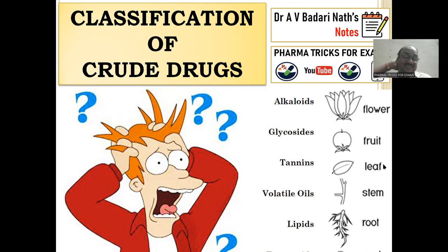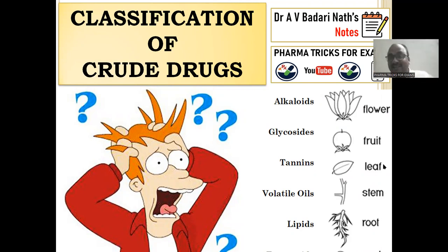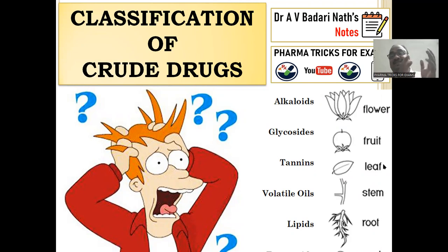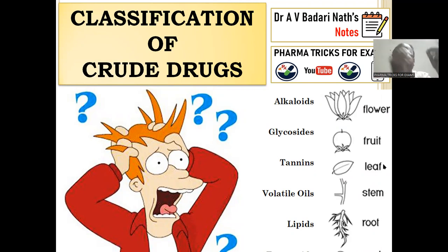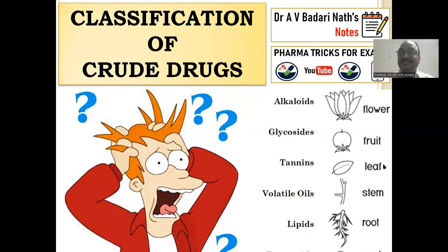God committed a mistake whenever He was creating nature. That mistake makes the pharmacognosy subject very complicated, especially the classification of crude drugs. It is very difficult for all pharmacy students, and it is also very difficult for all teachers to explain.